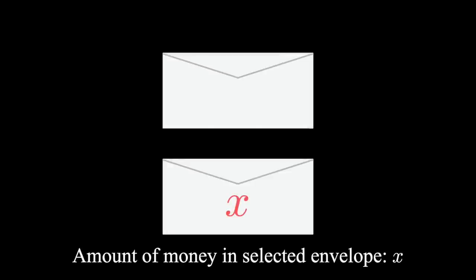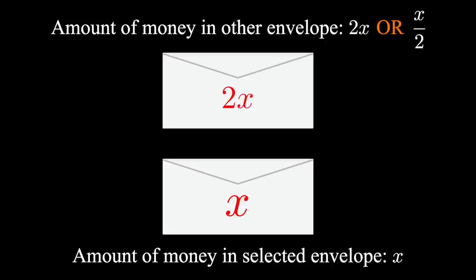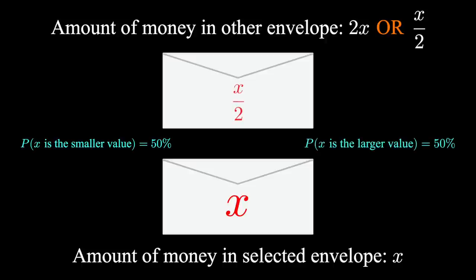Let's let the amount in our selected envelope be x, since we don't know it. The other envelope either contains twice as much, 2x, or if we did select the better envelope, the other envelope contains half as much, x over 2. The probability x is the smaller amount is 50%, and the probability x is the larger amount is also 50%.